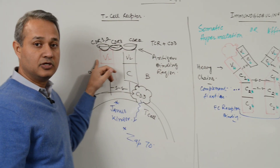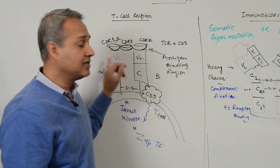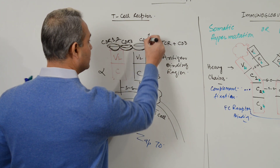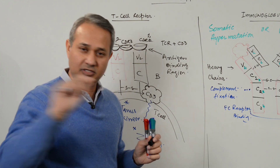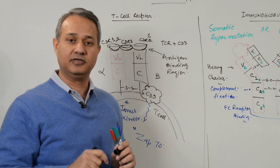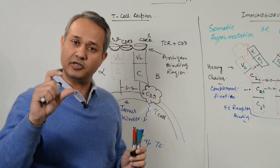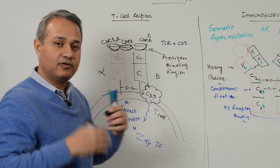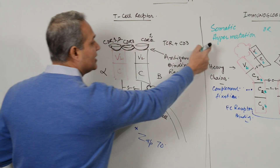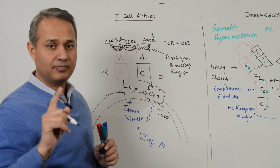T cell receptors do not show somatic hypermutation in their variable regions. This is because CDR1 and CDR2 only need to connect with MHC class 1 or 2, and MHC molecules in our body are of limited variety — not millions of types, only hundreds or fewer. Since this area binds a limited set of MHC molecules, somatic hypermutation is not needed.